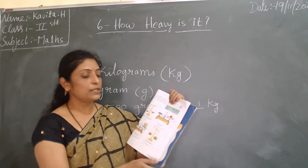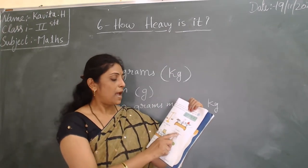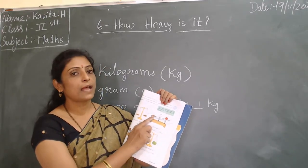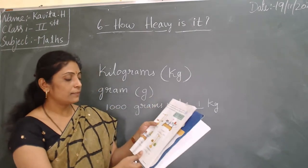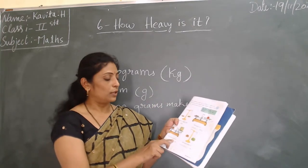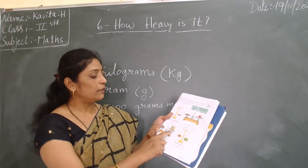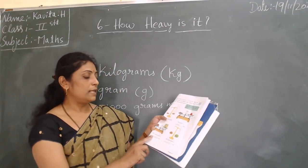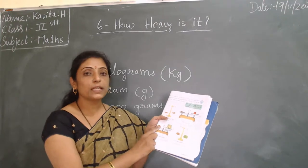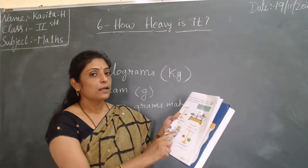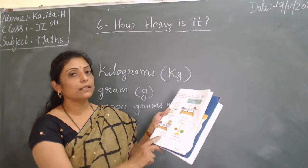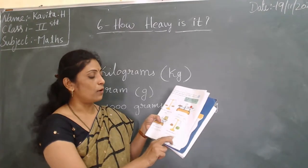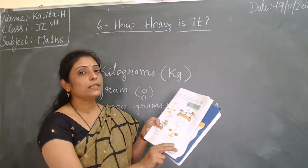The pen is lighter than 100 grams — write 'lighter than'. Next — the apple is lighter than 250 grams. Write that. Next — the wheat flour versus 2 kg. Wheat flour is heavier than 2 kg. Write 'heavier than'. Next — the watermelon is heavier than 1 kg.